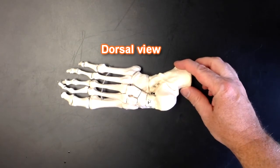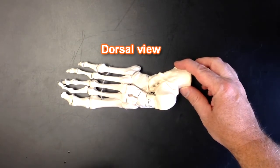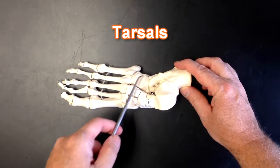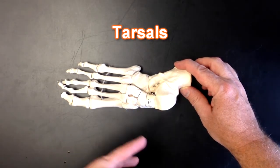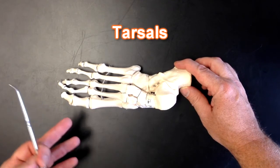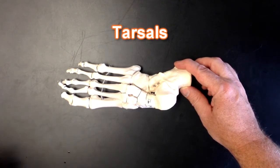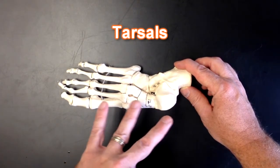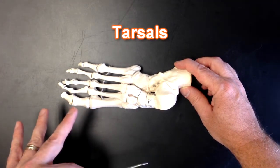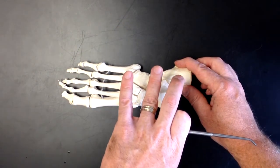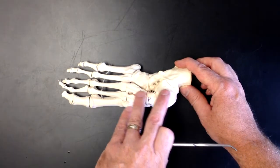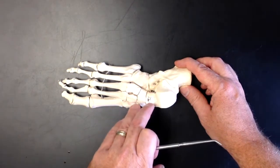Now the first bones I want to talk about would be the tarsal bones. Now we're in the foot, we're dealing with tarsals, metatarsals and phalanges like we did in the hand, instead of carpals, metacarpals and phalanges. In the wrist we call those carpal bones, but in the foot we call these bones here tarsal bones.